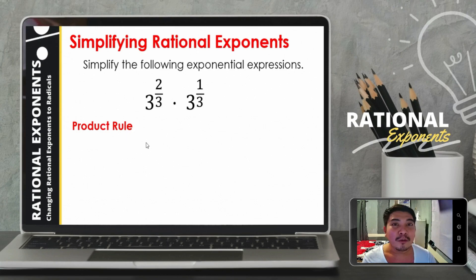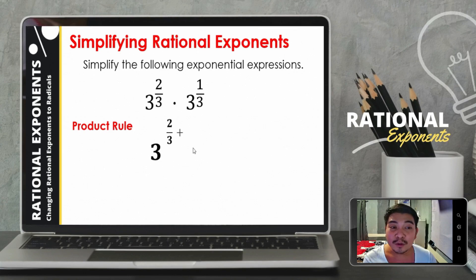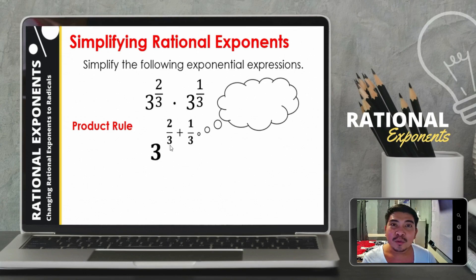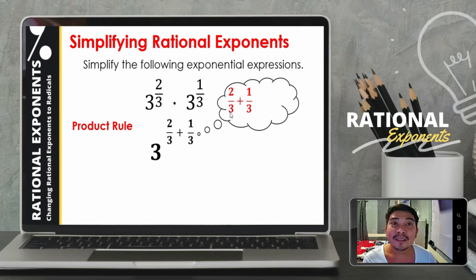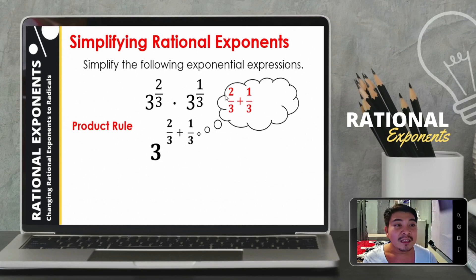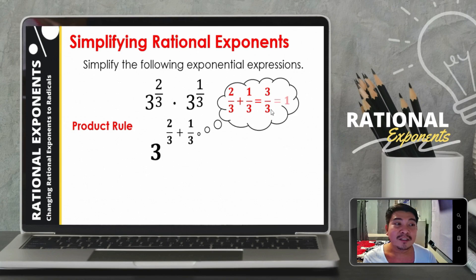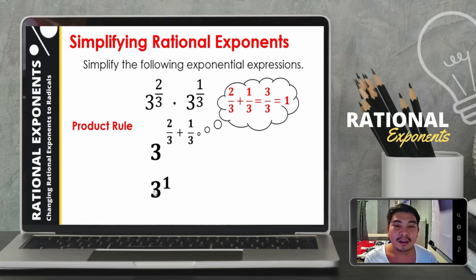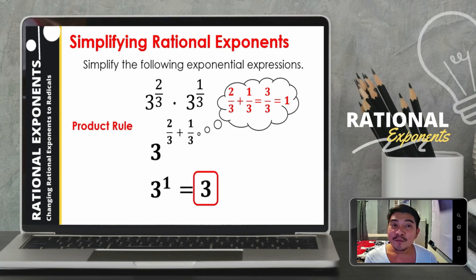The product rule states that when multiplying exponential expressions, we copy the base and add the exponents. So that will be 2 thirds plus 1 third. They have the same denominators — they are similar fractions — so we copy the common denominator 3 and add the numerators: 2 plus 1 equals 3. The result is 3 over 3, which simplifies to 1. So we have 3 raised to 1, which equals 3. The simplest form of the given expression is 3.